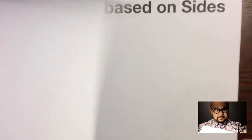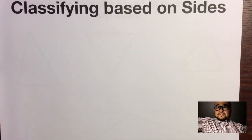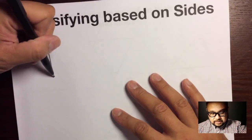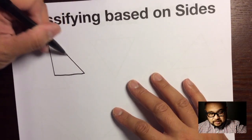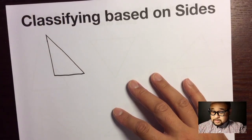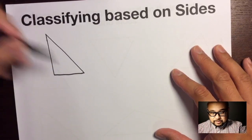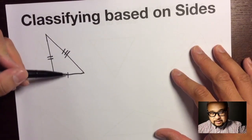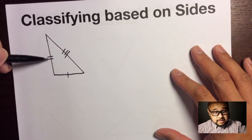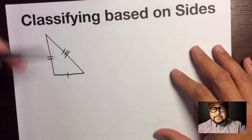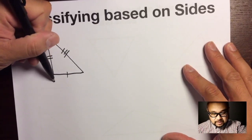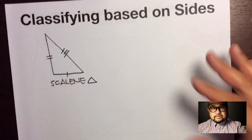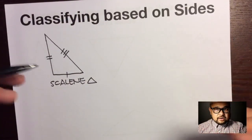The second way to classify a triangle is based off its sides. If we have a triangle where no sides are the same measure, we use one tick mark, two tick marks, and three tick marks to show that no sides are congruent — they all have three unique measures. This type of triangle is called a scalene triangle.